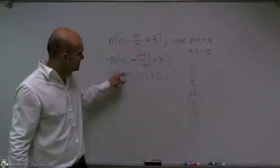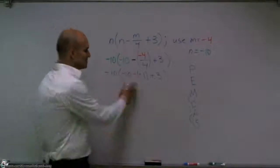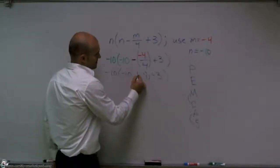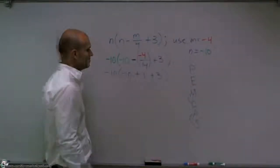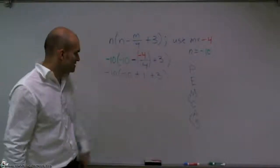Negative 4 divided by 4 is going to be a negative 1 plus 3. Well, if I have a minus a negative, I can rewrite that as a plus. Okay? So I'm just going to rewrite that problem a little bit. If it was a minus a negative 1, I rewrote it as a plus 1.